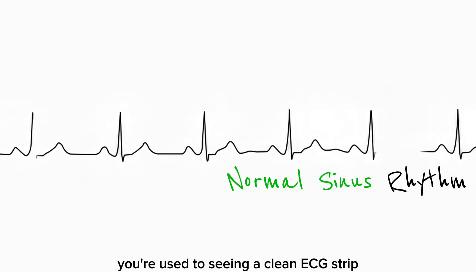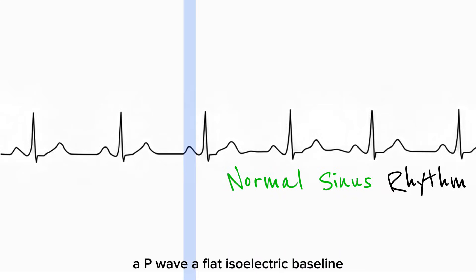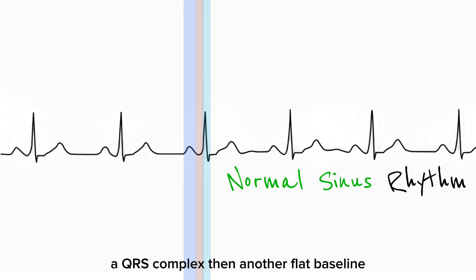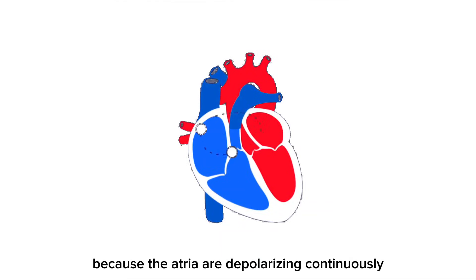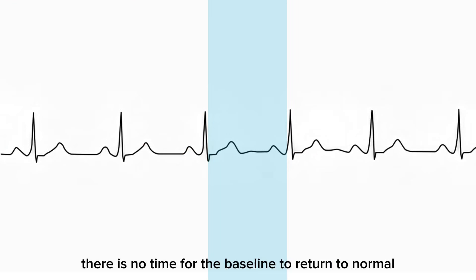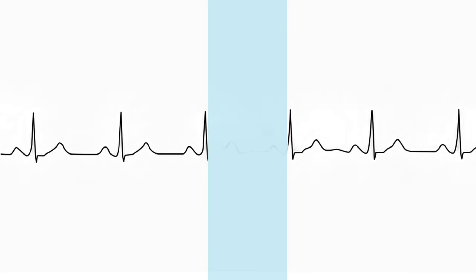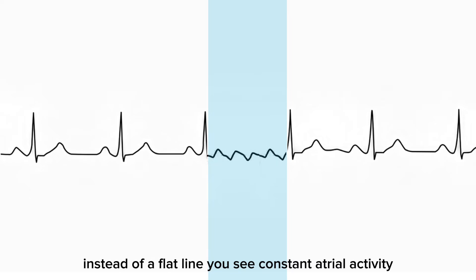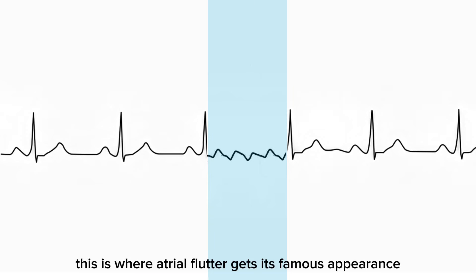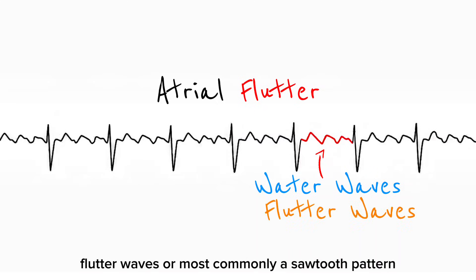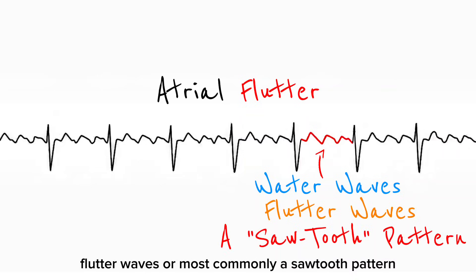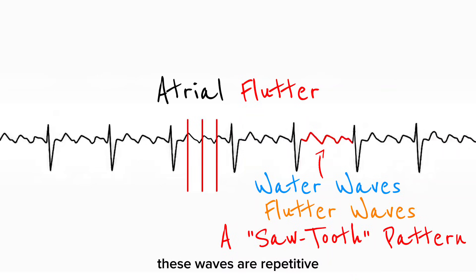In normal sinus rhythm, you're used to seeing a clean ECG strip — a P-wave, a flat isoelectric baseline, a QRS complex, then another flat baseline. But atrial flutter completely destroys that pattern. Because the atria are depolarizing continuously, there is no time for the baseline to return to normal. So the isoelectric baseline disappears. Instead of a flat line, you see constant atrial activity filling the space between QRS complexes. This is where atrial flutter gets its famous appearance: on the ECG, atrial flutter produces flutter waves, often described as sawtooth waves, or most commonly, a sawtooth pattern. These waves are repetitive, uniform, and evenly spaced.